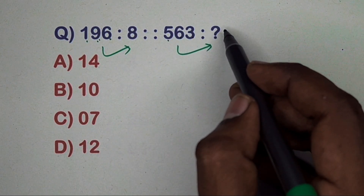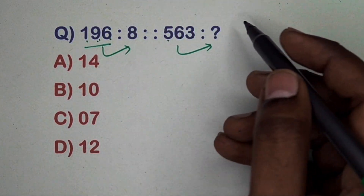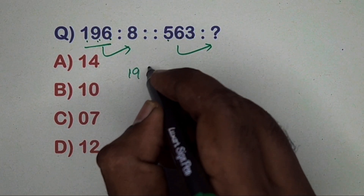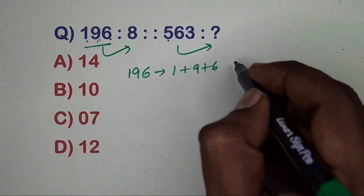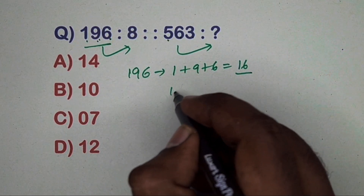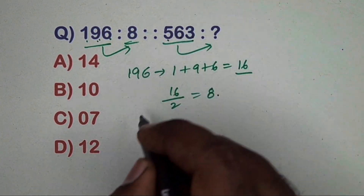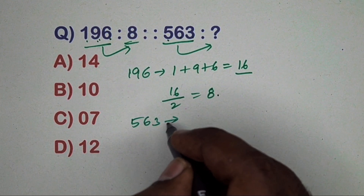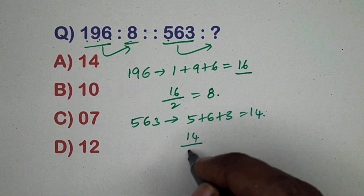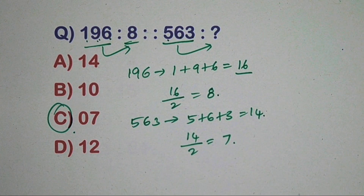Next question: 196 related to 8, 563 related to which number? Take 196 — add digits: 1 plus 9 plus 6 equals 16, then 16 divided by 2 equals 8. Same way, 563 — 5 plus 6 plus 3 equals 14, and 14 divided by 2 equals 7. Option C is the correct answer.